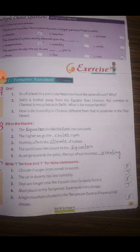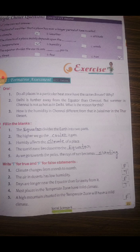Third: days are longer near the equator than far from it — it depends on the seasons. Fourth: most places in the temperate zone have mild climate — temperate zone mild means average weather, it is true. Fifth: high mountains situated in the temperate zone will have mild climate — mild climate is not expected in high mountains, because the climate changes, so it is false.